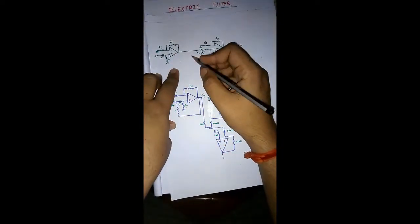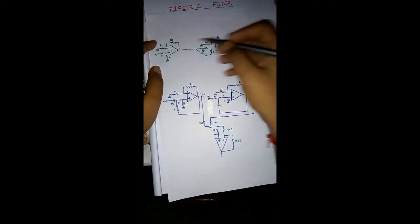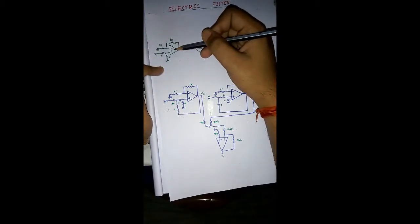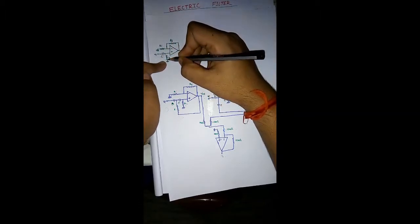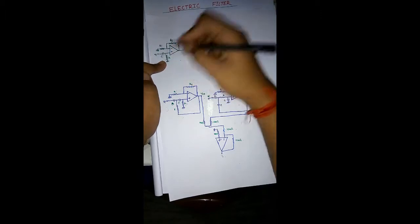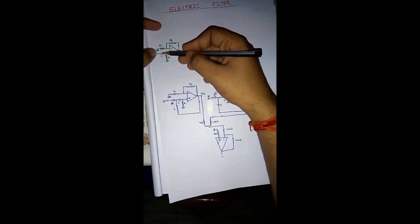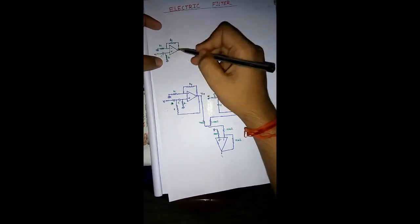These circuits are conventionally called the Sallen-Key topology. For the first order band pass filter, it contains a high pass filter and a low pass filter in series. The capacitor passes only AC voltage and blocks DC voltage, while the resistor passes DC voltage and blocks AC voltage, which is why AC goes through one path for high pass filtering.